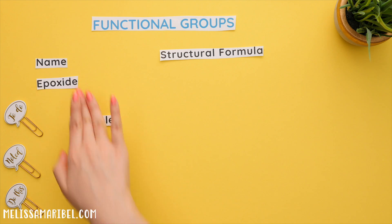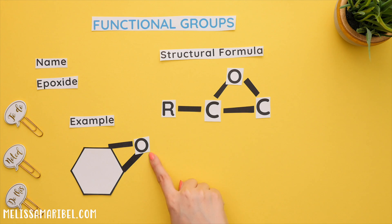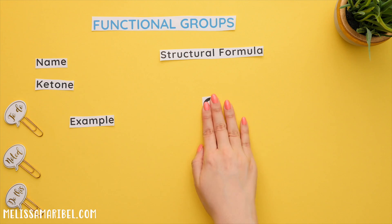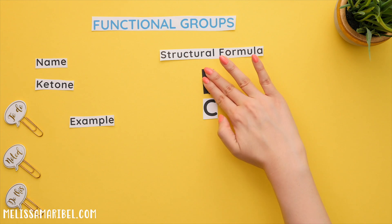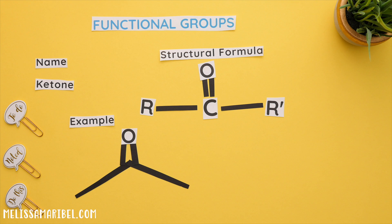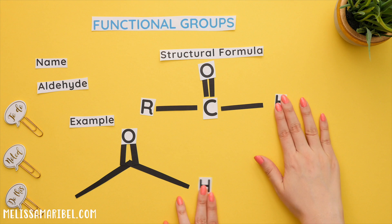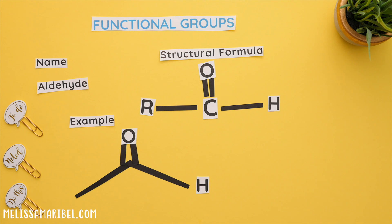You'll see that in this example this R group is different from the other. An epoxide has a triangular shape with the oxygen being at the top of this triangle-shaped carbon chain. A ketone has a carbon that is double bonded to oxygen, and that carbon is attached to two R groups — either the same R groups or different ones. An aldehyde is very similar to a ketone; the only difference is that it has a hydrogen instead of two R groups.